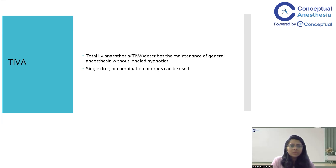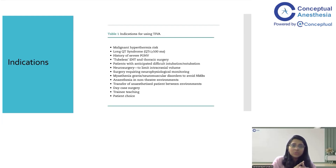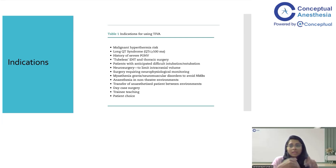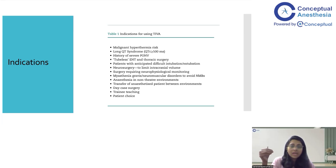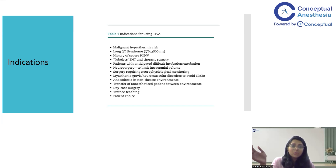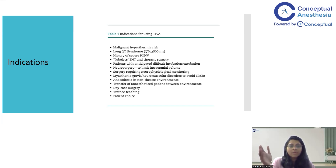There are definitive indications wherein you will use TIVA as an alternative to inhalation anesthetic agents. Those indications include malignant hyperthermia risk patients — those with a previous episode of malignant hyperthermia or a familial history — patients with long QT syndrome where use of volatile anesthetics can precipitate arrhythmias, and those with a history of severe post-operative nausea and vomiting especially with inhaled agents and nitrous oxide. TIVA is also used for tubeless ENT surgery and thoracic surgery, and when the patient has anticipated difficulty in intubation or extubation where you need to titrate the drug so that when you stop it, the patient wakes up promptly.